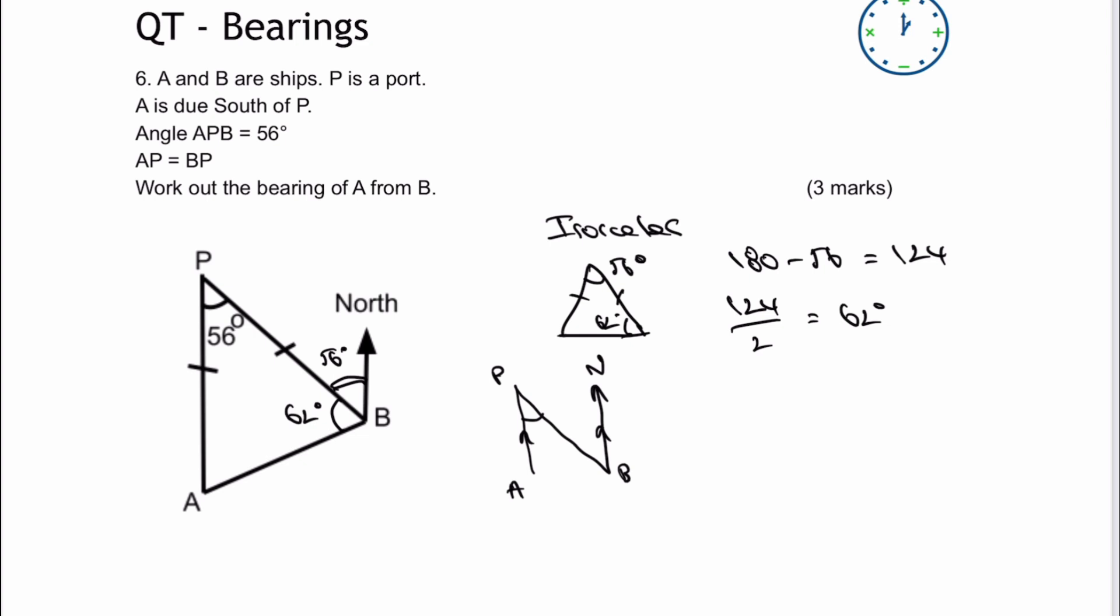So therefore, if we know this is 56 degrees, which is the top of the triangle, we also know that this must be 56 degrees as well, because of alternate angles.